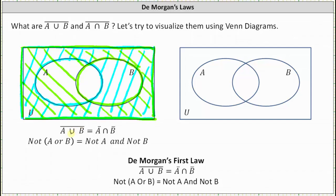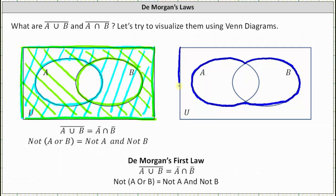We're trying to show the complement of the union of A and B equals A complement intersect B complement. So we're looking for the intersection of the light blue and light green regions, meaning the region that is shaded twice. Notice that that would be the region outside A union B, which is the same as the complement of the union of A and B. So the final result of A complement intersect B complement is the same as the complement of the union of A and B, which is this region here.